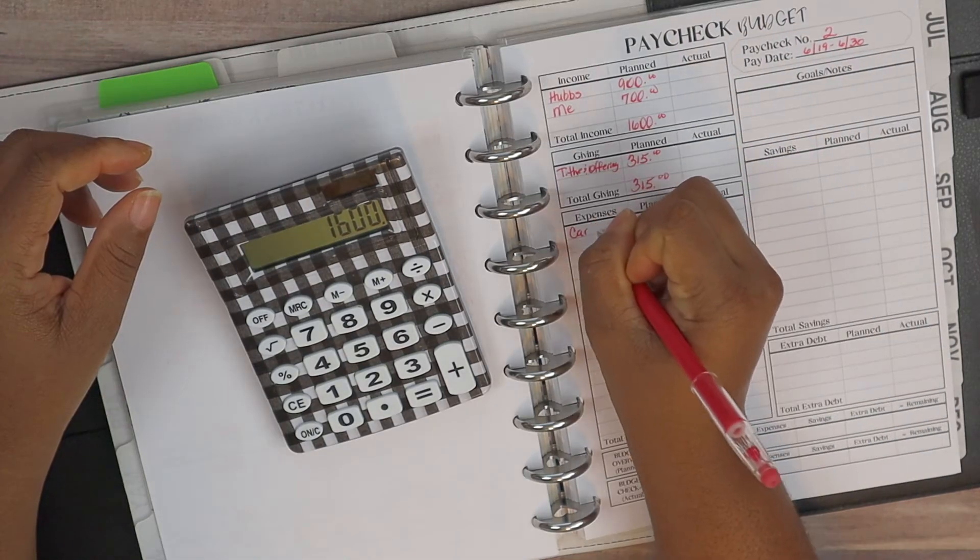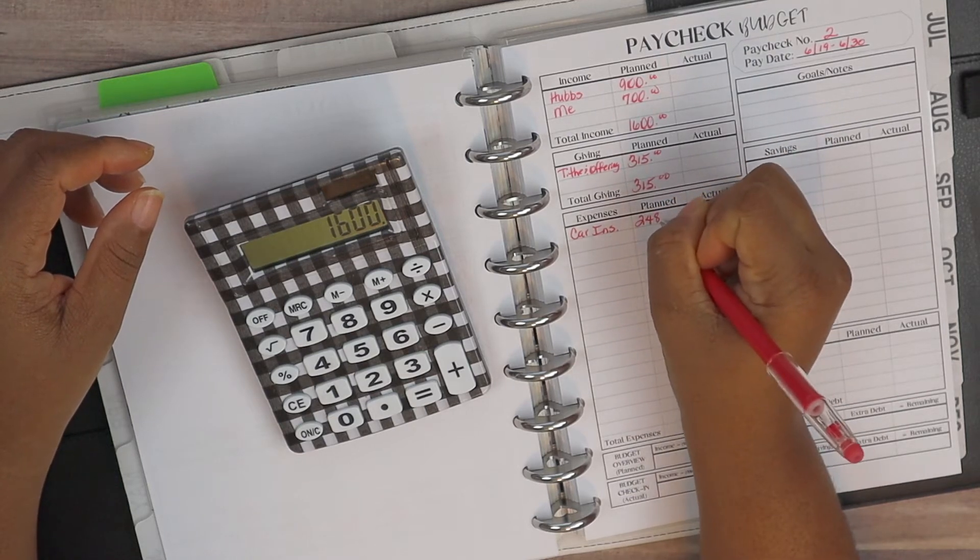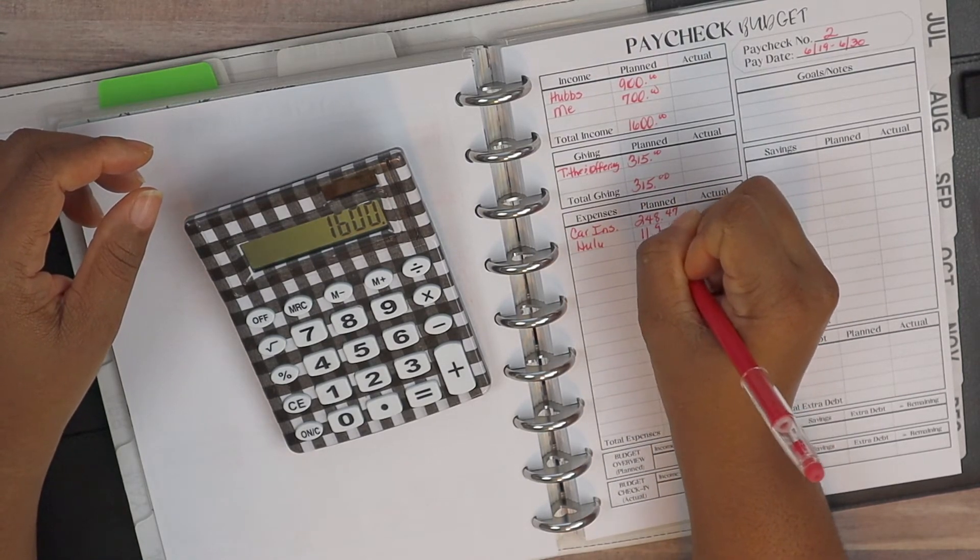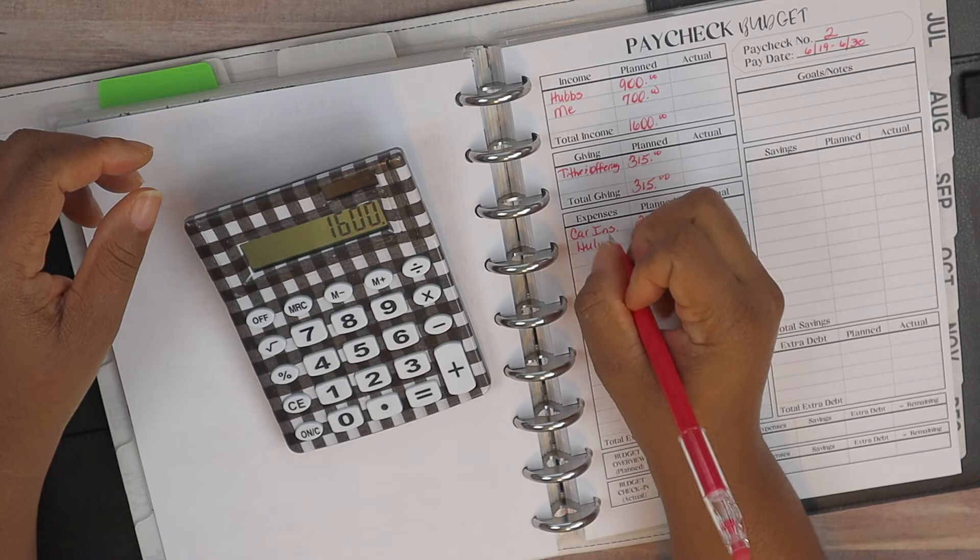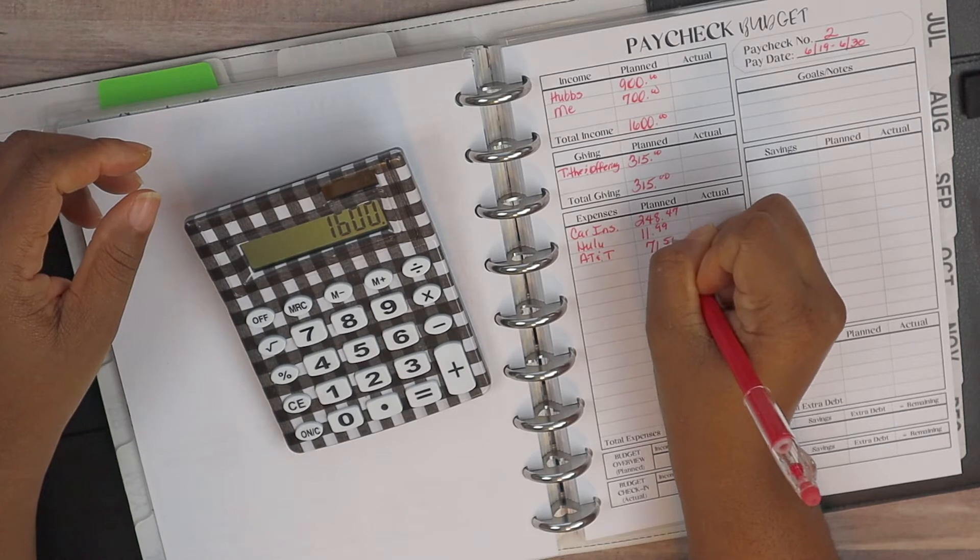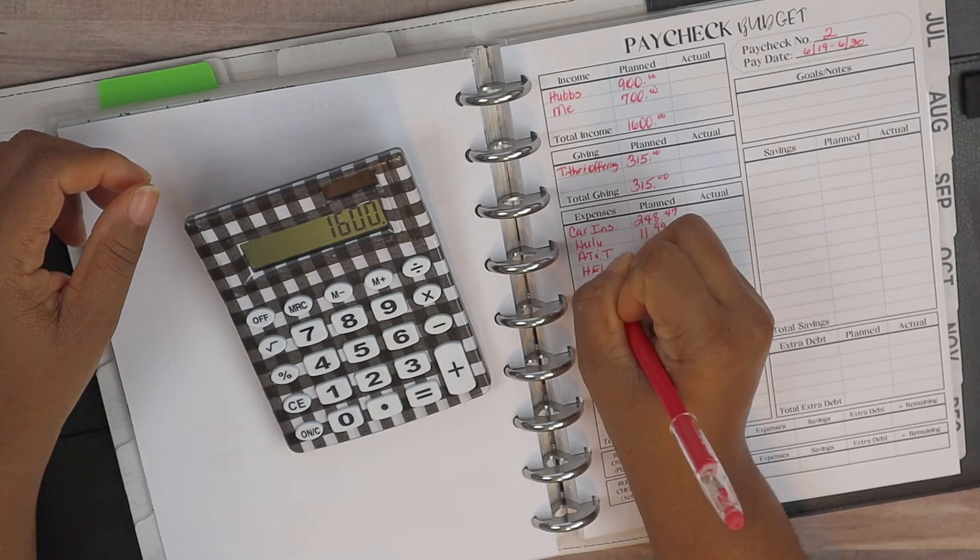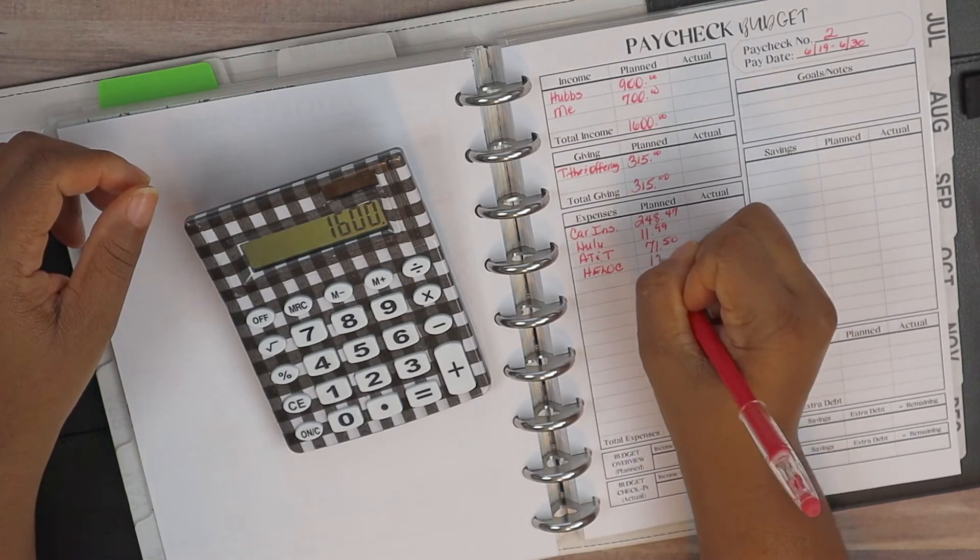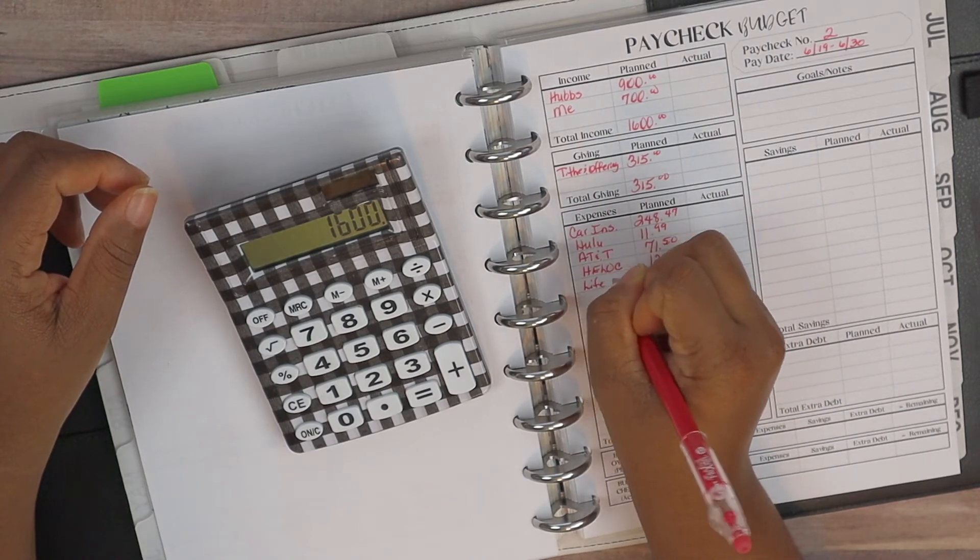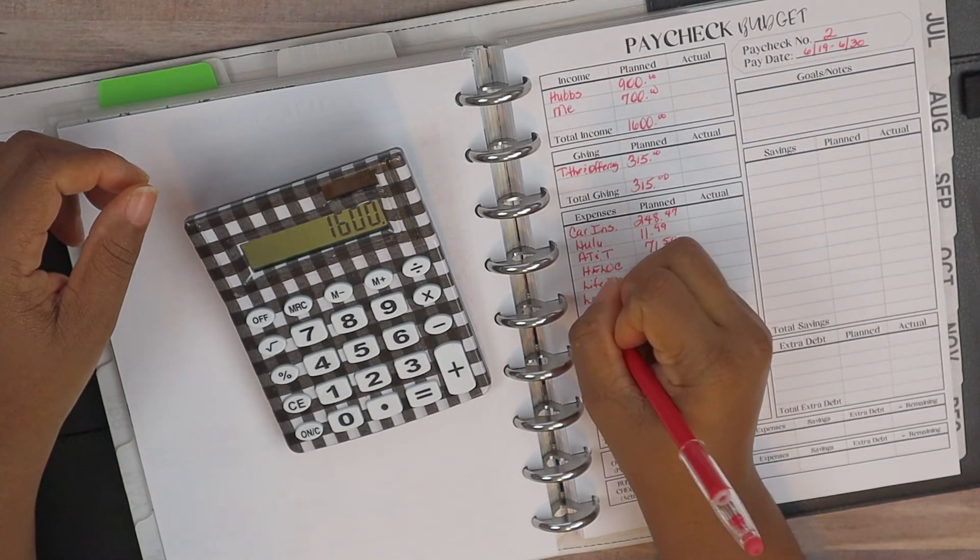Our expenses we have: our car insurance which is at $248.47, we have Hulu at $11.99, and generally I speed the video along but I'm not going to do that today. AT&T, we got that to take care of and that comes in at $71.50, and then our HELOC is at $125, and our life insurance at $62.64.